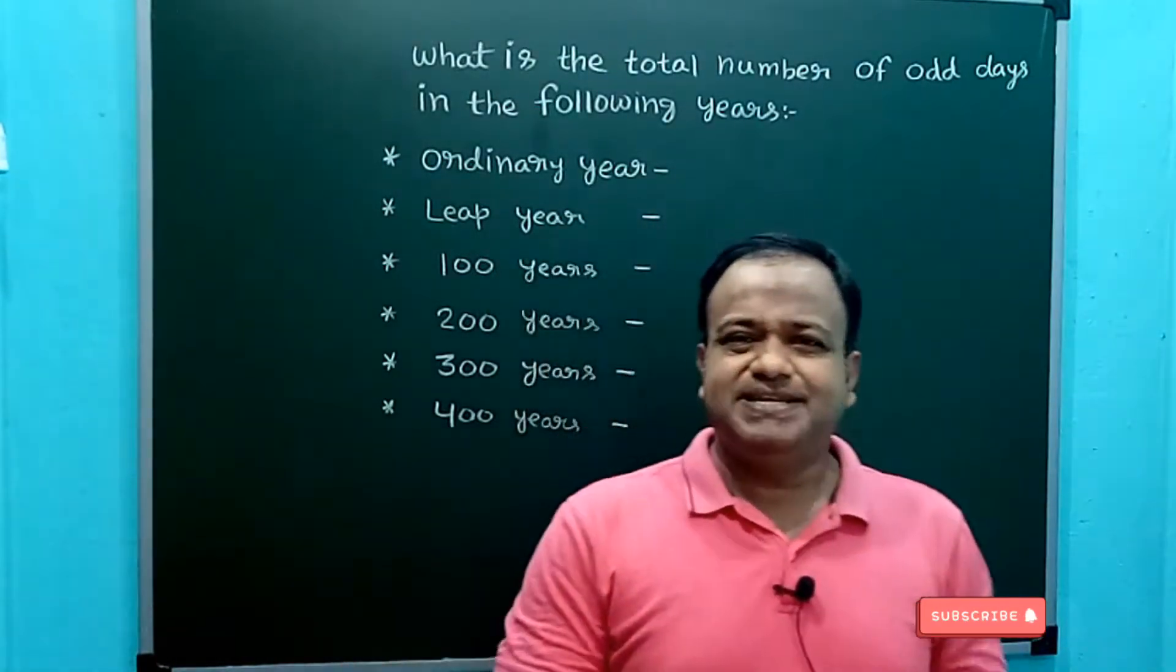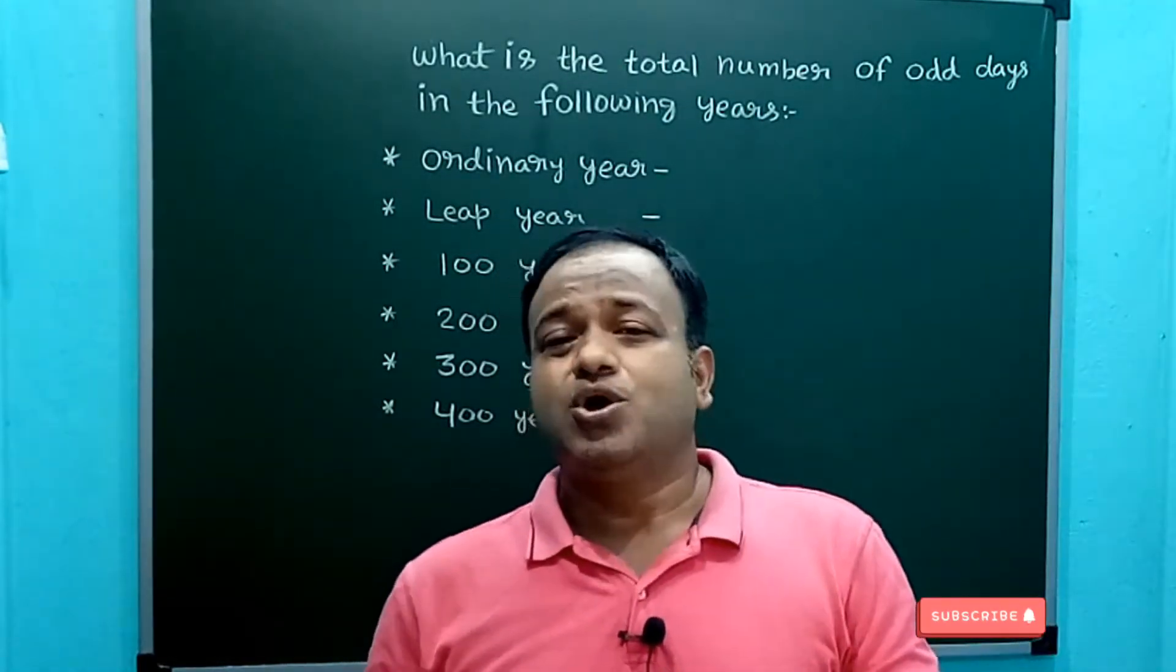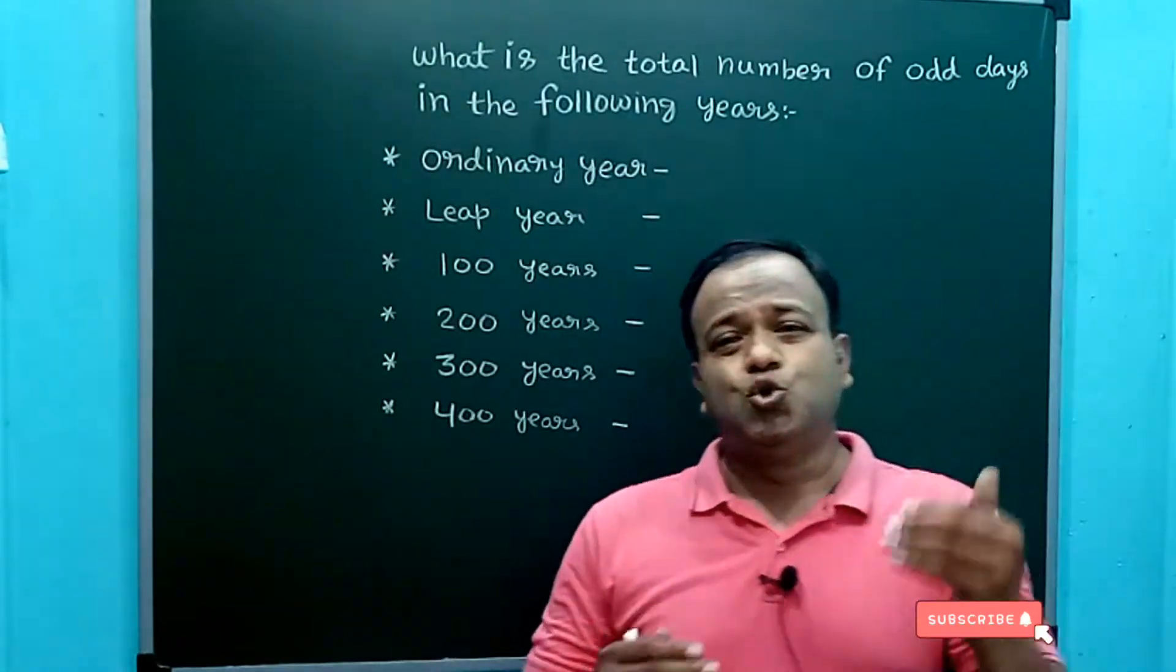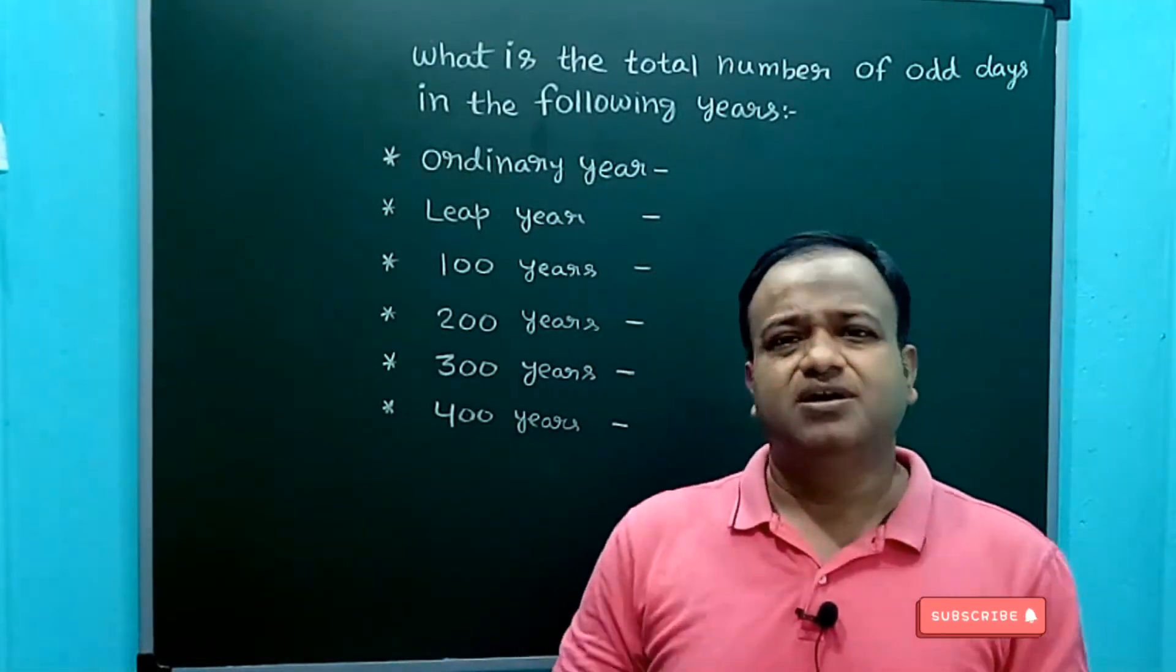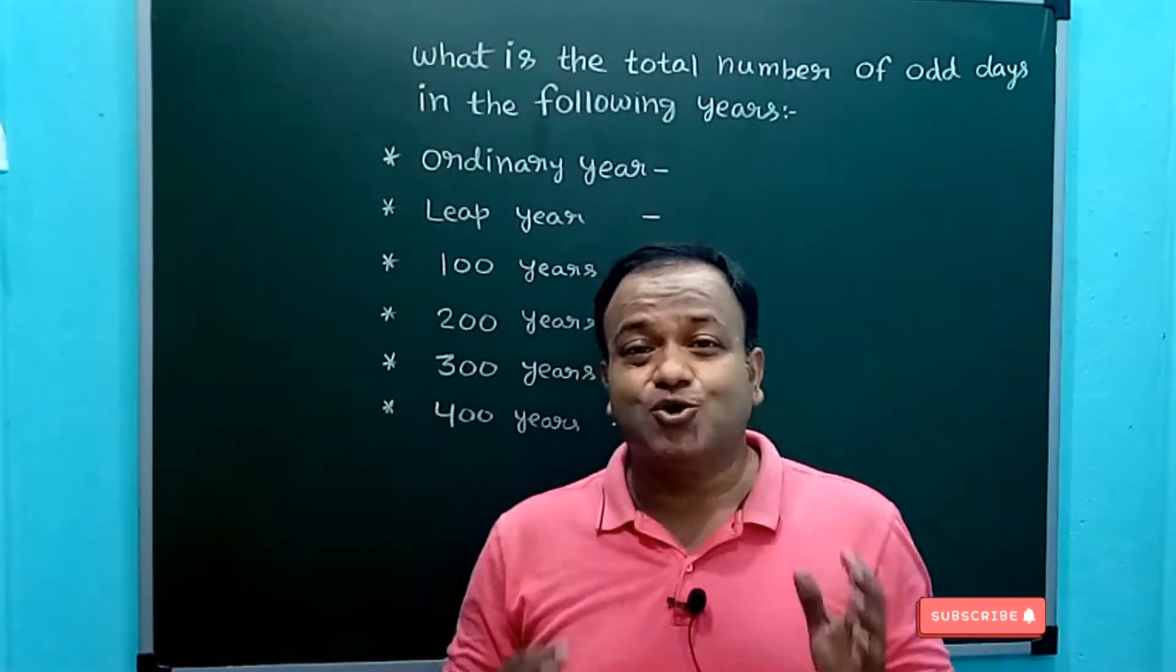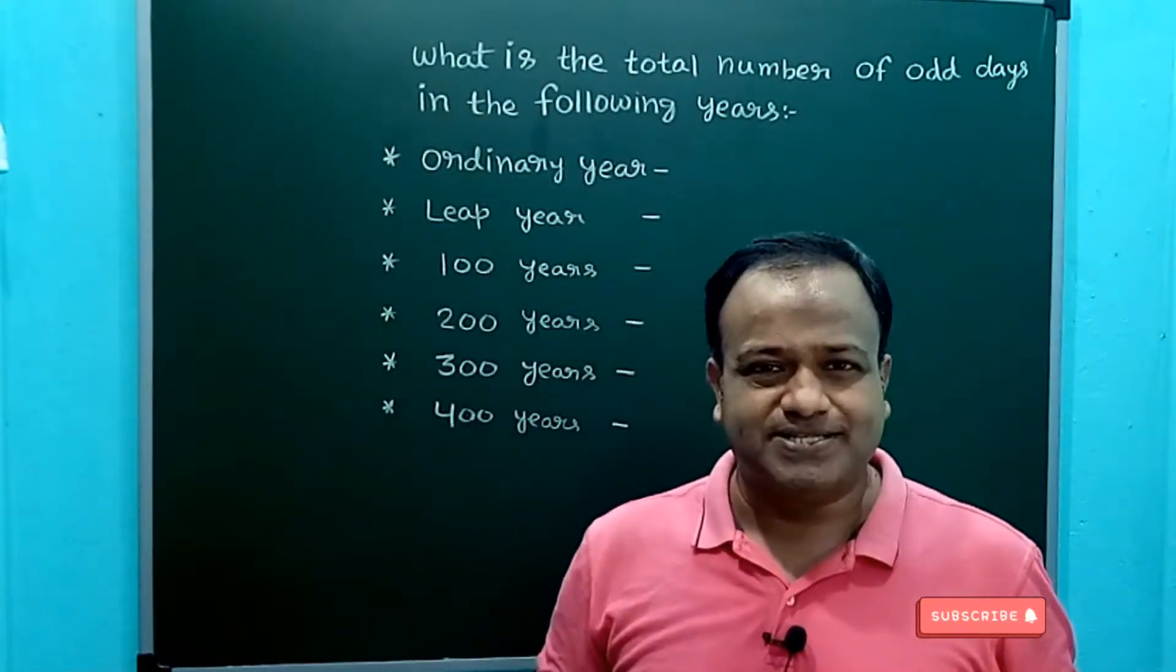Since we know that seven days makes a week, if we take a group of seven days in a given period of time—suppose one year, two years, three years—the days which are left over after making a group of seven days are called odd days.